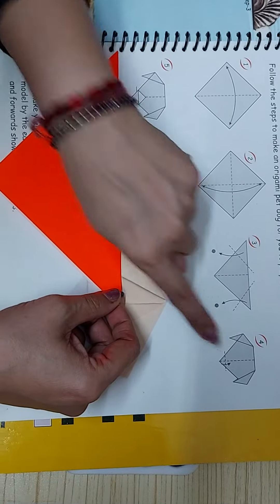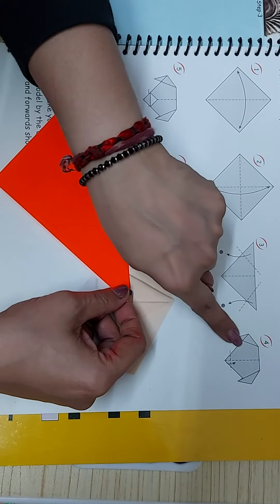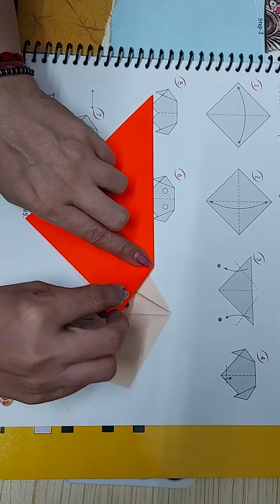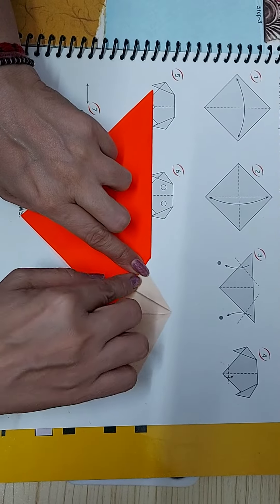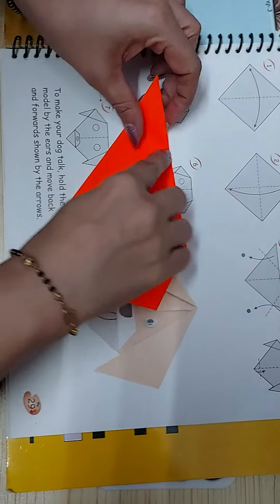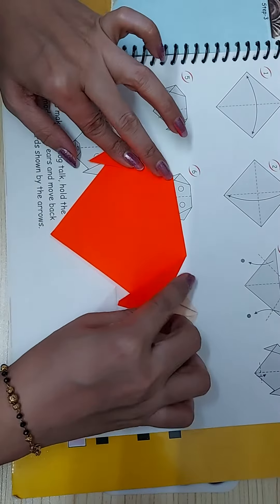Now we are going to make the dog's ears, which is step number 4. You are going to keep it like this, turn it like this, and then turn it like this.